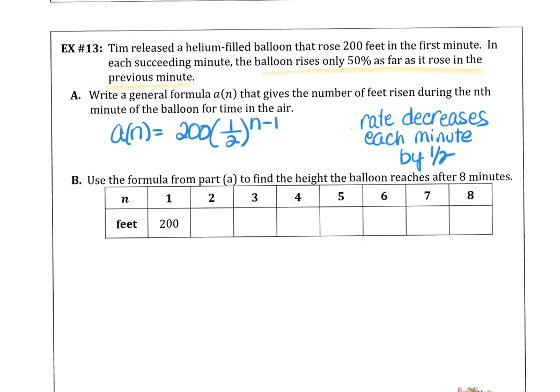Completing that table, 200 times a half, 100 times a half, at 4, n is 4, that's 25, then 12 and a half, 6 and a quarter, 3.125, and 1.5625.